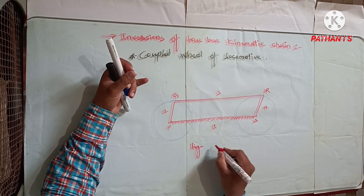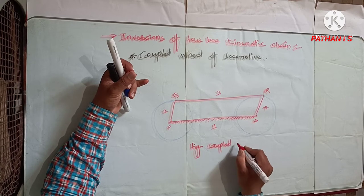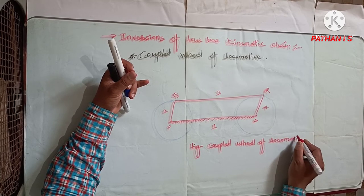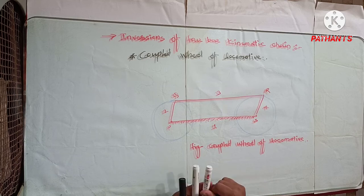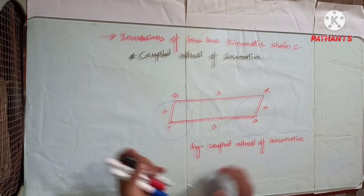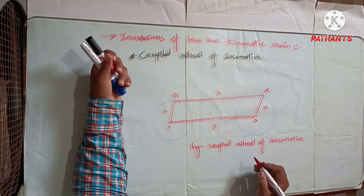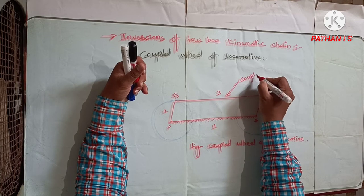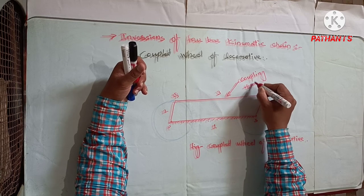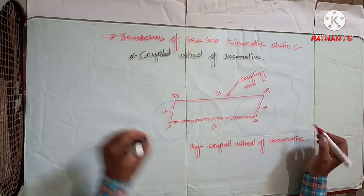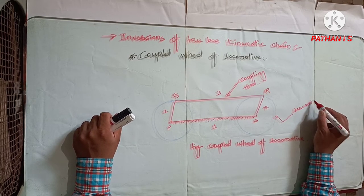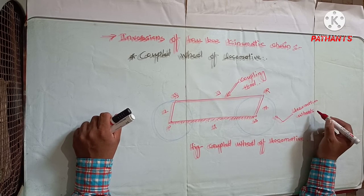In the figure, there are the coupled wheels of locomotive. This is what we call the coupling rod or connecting rod. And these are the locomotive wheels.